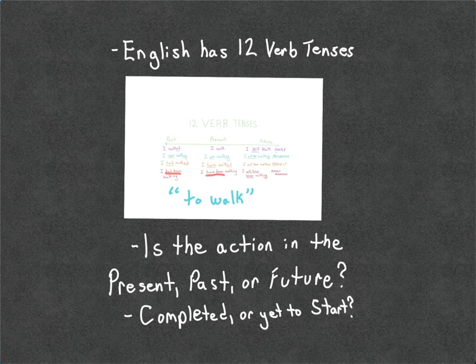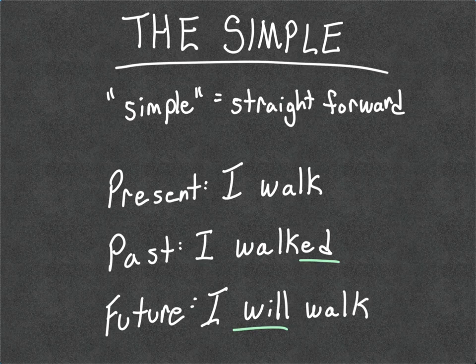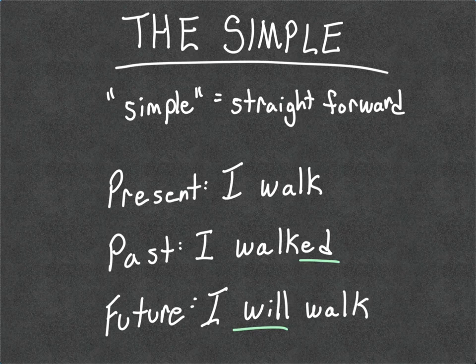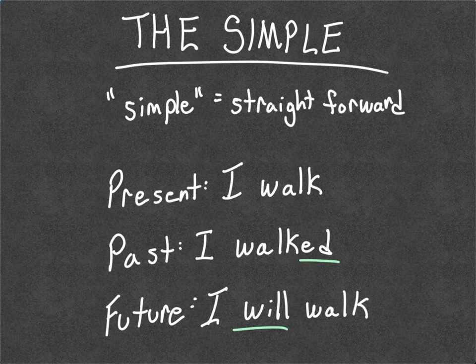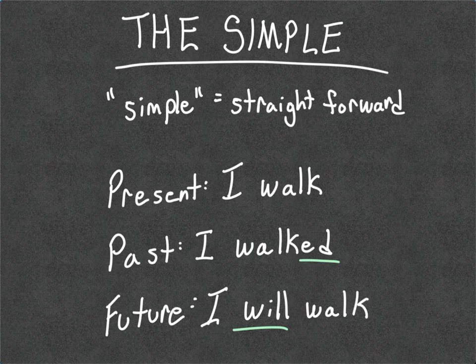With all this in mind, let's get into the 12 verb tenses. I'm using the example "to walk." First up, we have the simple tense — it's called simple because it's straightforward. In the present tense, using the first-person pronoun I: I walk. Past: I walked. Future: I will walk. For the present tense, we just put our pronoun in front of the infinitive. To form the past tense, I add E-D to walk to form "walked." And when I'm done this recording, I will walk.